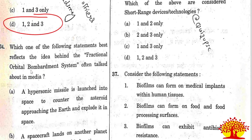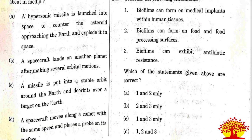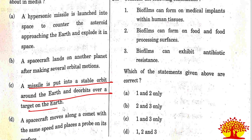Thirty-fourth question: which statement best reflects the idea behind Fractional Orbital Bombardment System (FOBS), often talked about in the media? Option C is correct - a missile is put into a stable orbit around the Earth and de-orbits over the target. FOBS is a warhead delivery system that uses a low Earth orbit towards its target destination and de-orbits through a retrograde engine burn just before reaching the target.